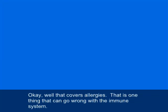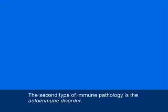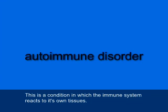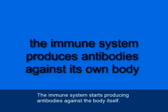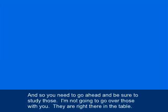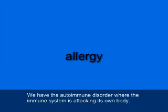That covers allergies — one thing that can go wrong with the immune system is it can overreact to something in the environment that is not harmful at all. The second type of immune pathology is the autoimmune disorder (A-U-T-O-I-M-M-U-N-E). This is a condition in which the immune system reacts to its own tissues, producing antibodies against the body itself. The textbook's Table 6.2 shows a variety of examples — all diseases in which the body is attacking itself.